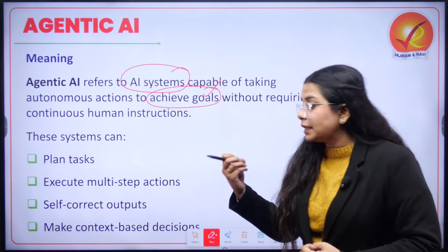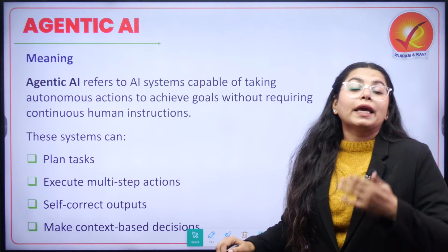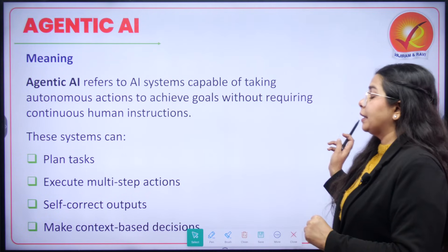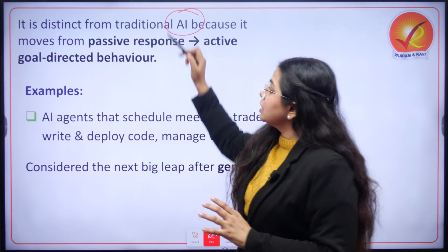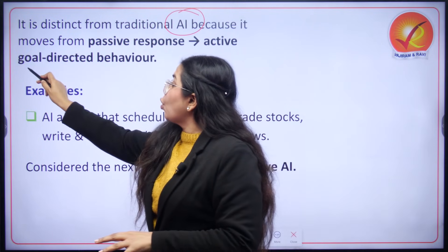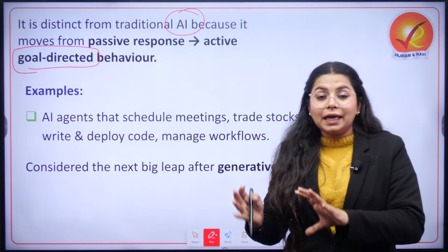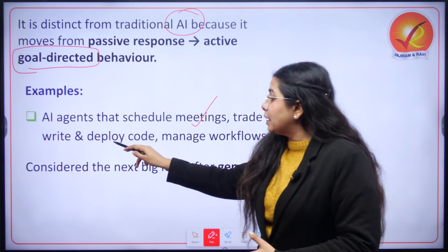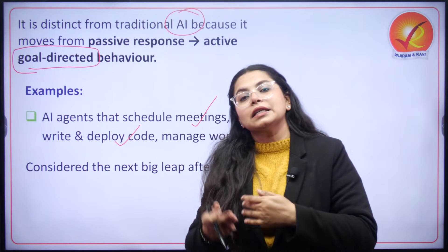This will be very helpful in planning tasks, executing multi-step actions, self-correcting outputs if they are wrong, and handling context-based questions as well. Agentic AI is very different from traditional AI because this is a movement from passive response to a directly goal-directed behavior. For example, AI agents can help in scheduling meetings, trading stocks, writing and deploying code, and managing workflows based on a certain goal that needs to be achieved.